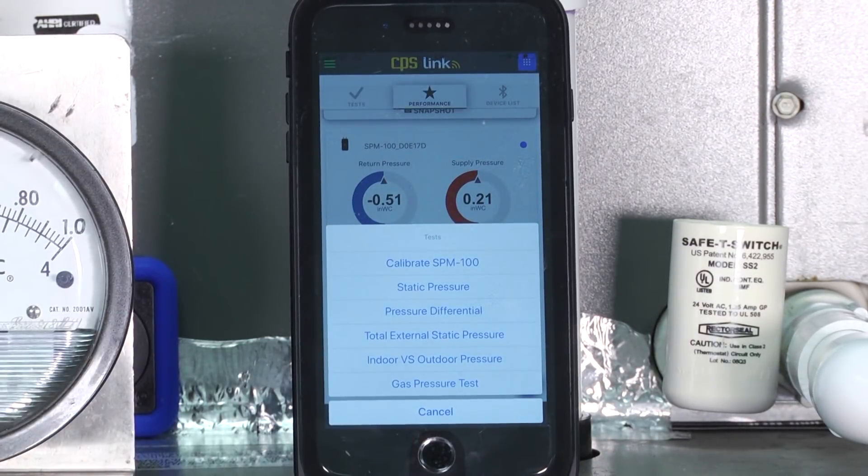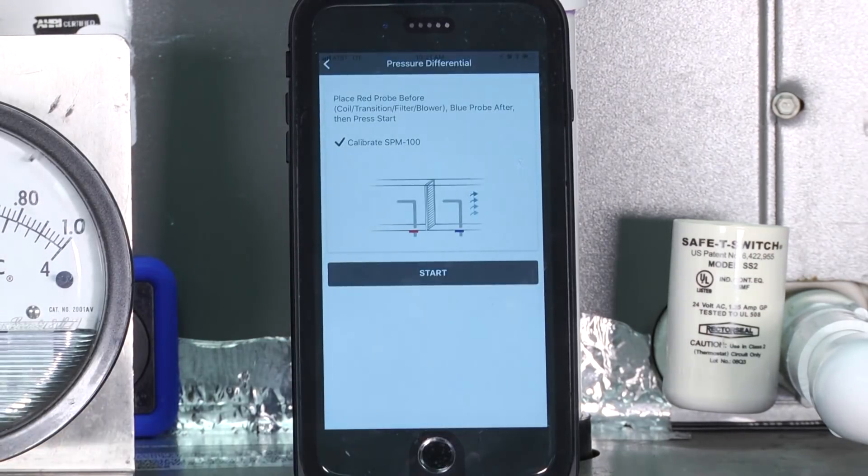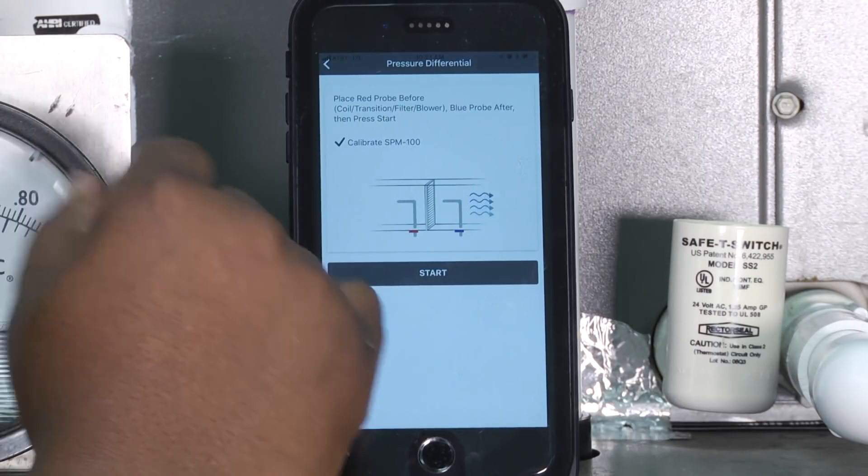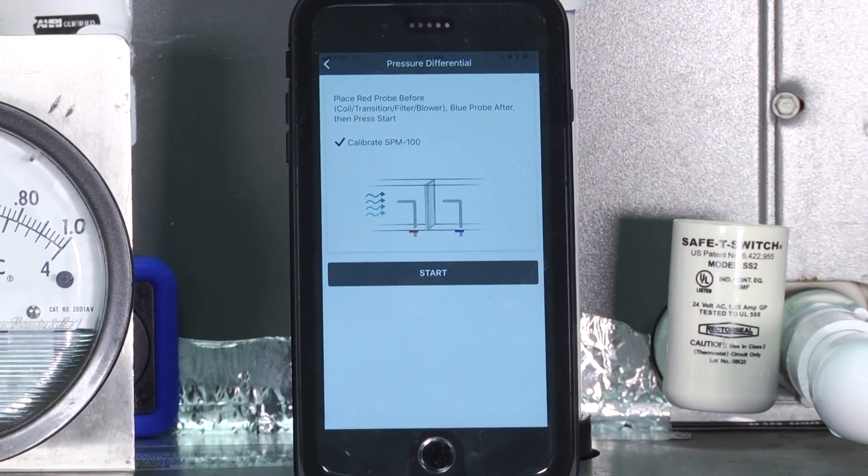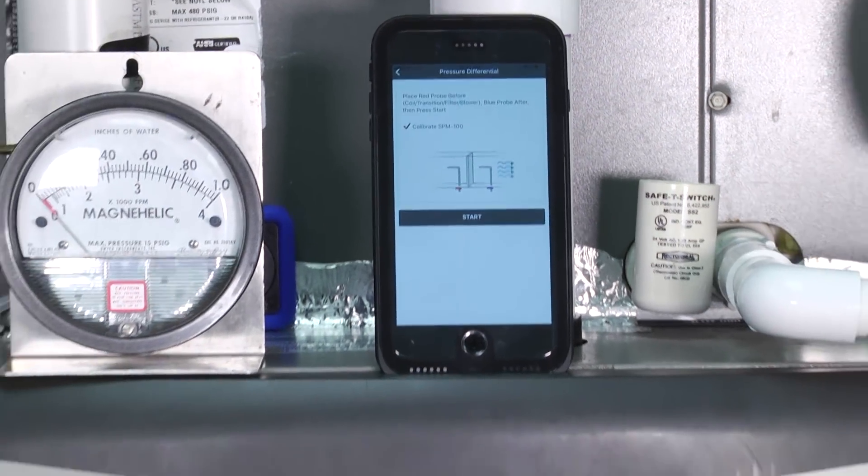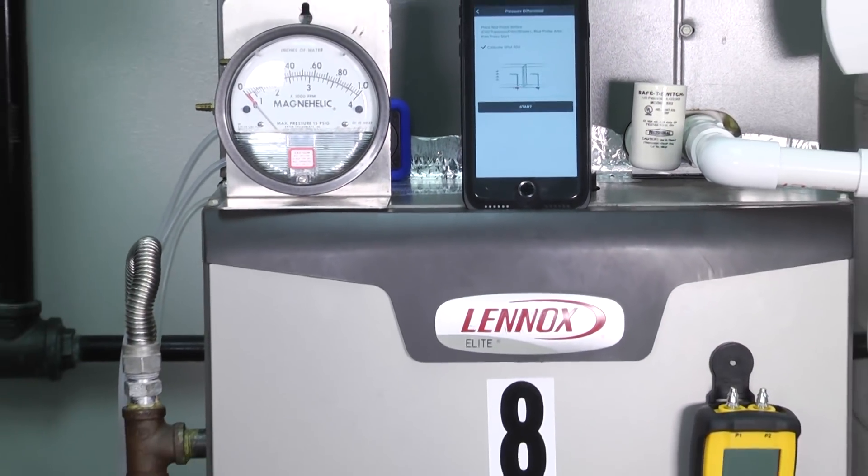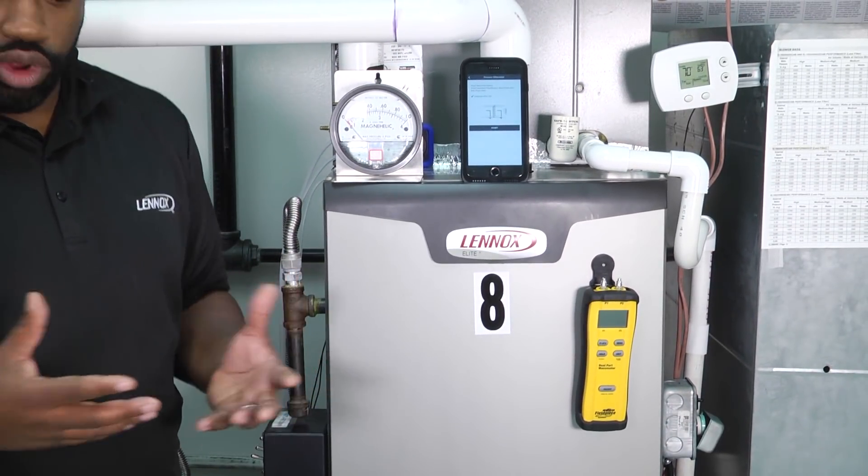I can go to pressure differential. If you see closely, I can check a drop over a coil, a transition, a filter, or just the blower depending on where I place my probes. Basically what you're going to do is sandwich the thing you're trying to get a pressure drop across. All of these tools can be used to help you calculate and dial in what your static pressure is.